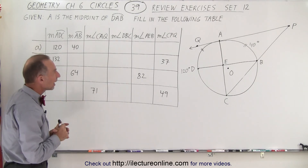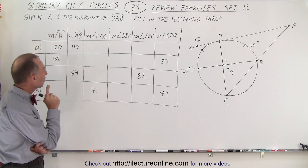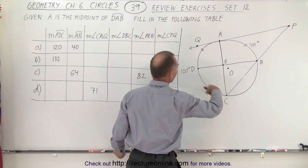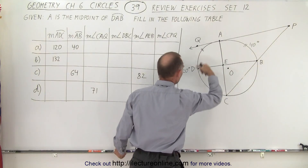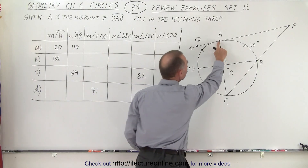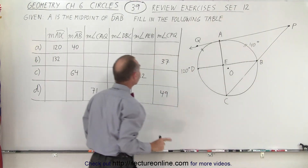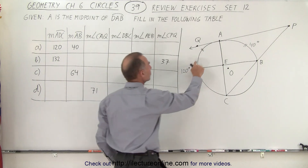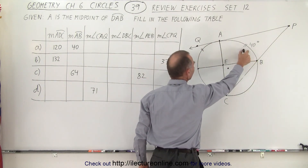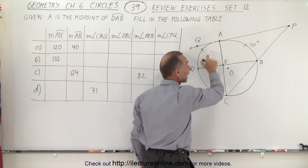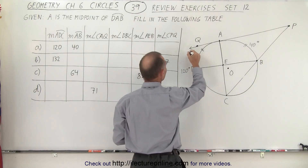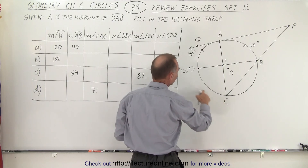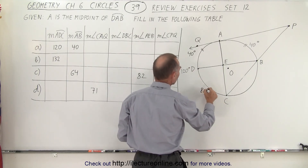These are of course all degrees. They give us two pieces of information: the measure of the arc from A to D to C, so this full measure right here is 120 degrees, and the measure from A to B is 40 degrees. They also give us one hint that A is the midpoint of the arc from D to A to B, which means that the measure of this must equal the measure of that. Therefore we know that this must be 40 degrees right here, and that means that this here is 120 minus 40, which is 80 degrees.